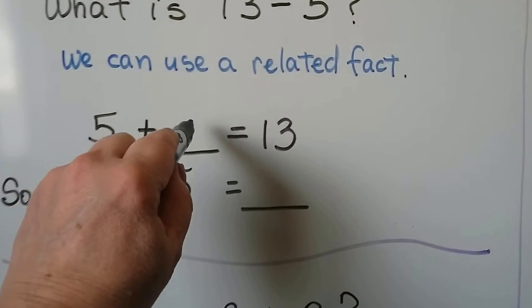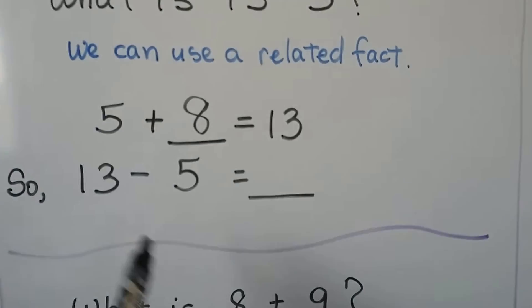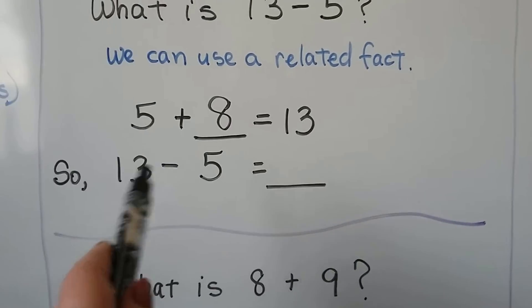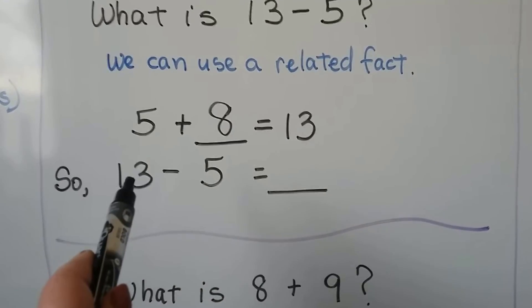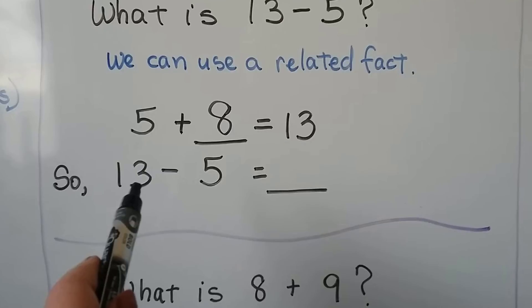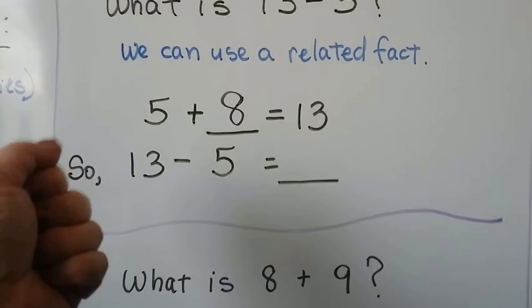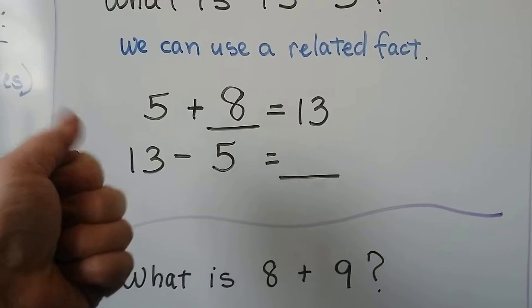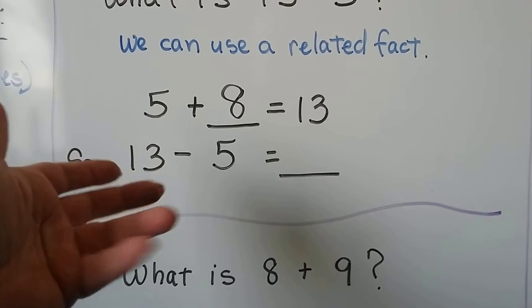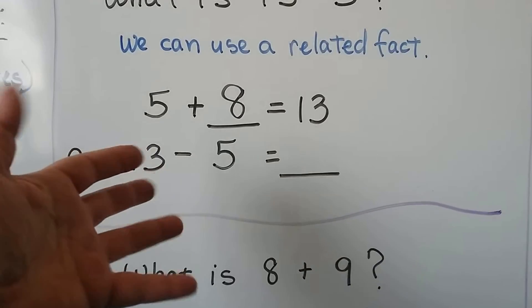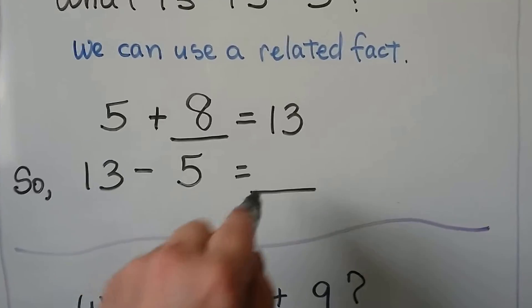5 plus 8 is 13. We can think of 13 minus 5 — we can start at 13 and count back 5: 13, 12, 11, 10, 9, 8. We ended up at the number 8.